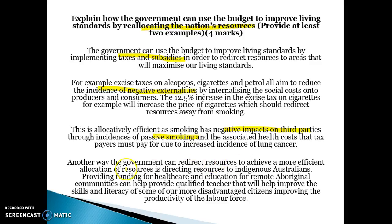Another way the government could redirect resources is to direct them to Indigenous Australians, providing healthcare and education to remote Aboriginal communities. For example, giving them access to qualified teachers will help to improve their skills and literacy, and therefore make them more efficient and more productive members of the workforce. You don't need to talk only about market failures — you can also talk about other ways the government can use funds to improve education and workforce productivity.